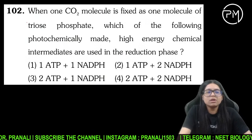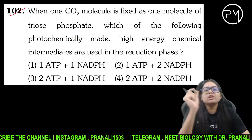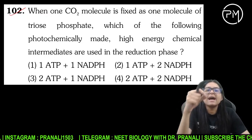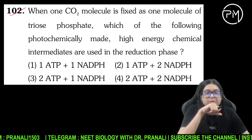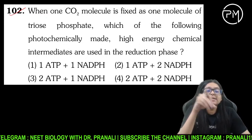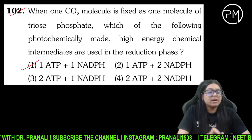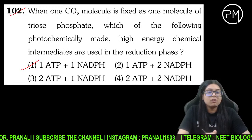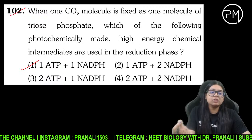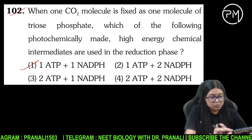Question number 2: jab ek molecule CO2 fix ho raha hai as one molecule of triose phosphate, kaun sa intermediate use ho raha hai? Beta, reduction phase mein 1 ATP aur 1 NADPH — haana, per CO2 molecule, 1 ATP aur 1 NADPH use hota hai.